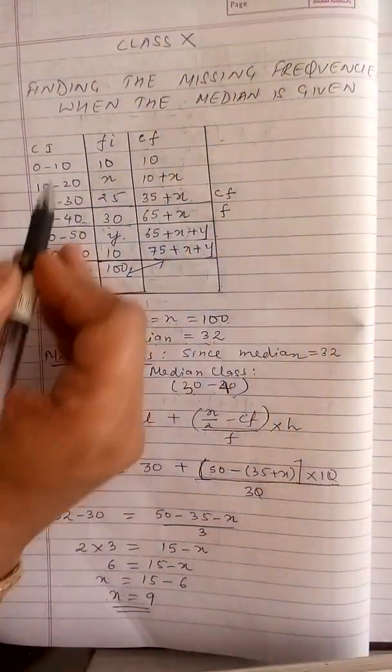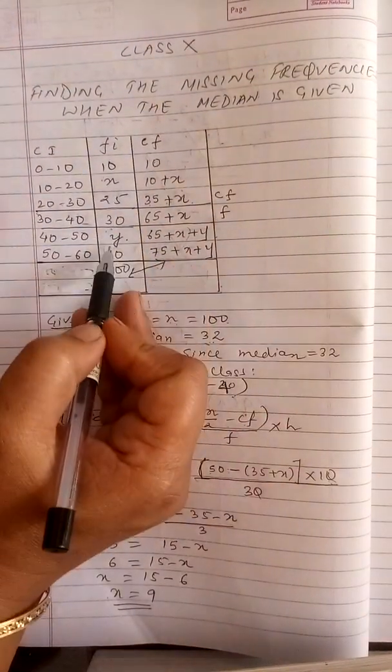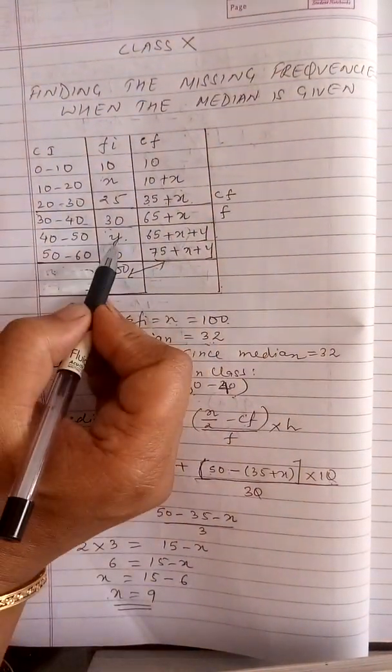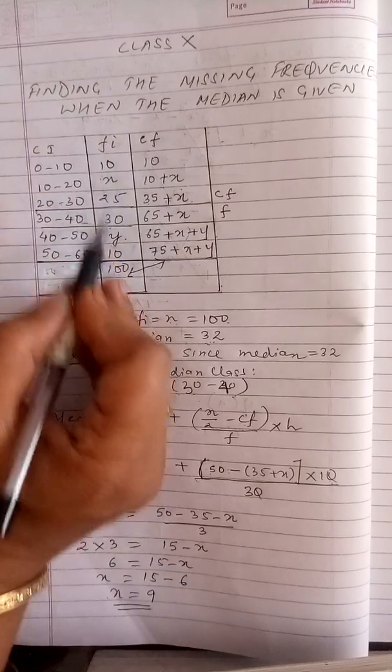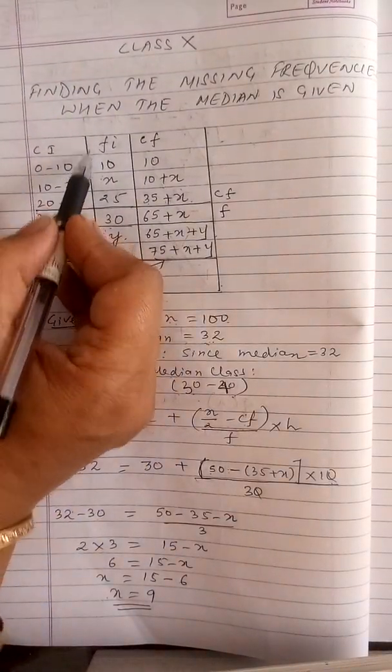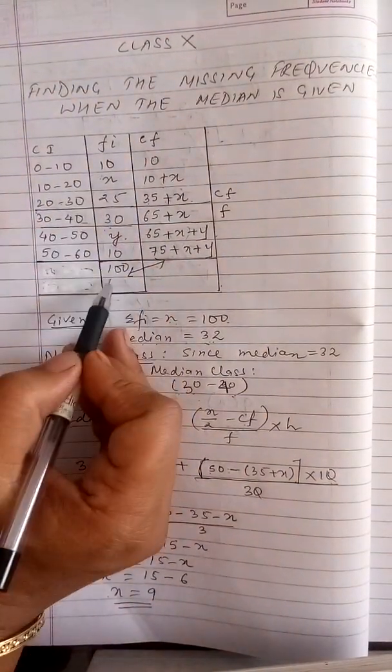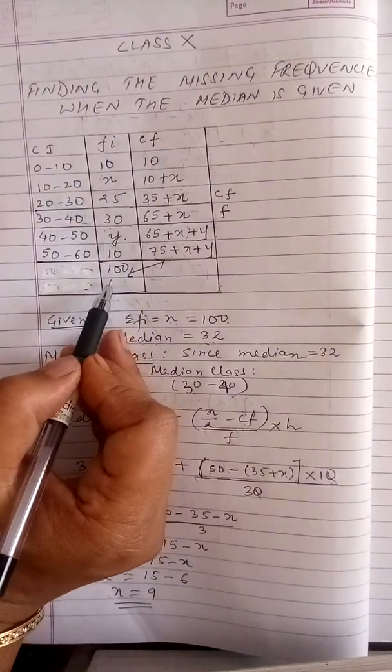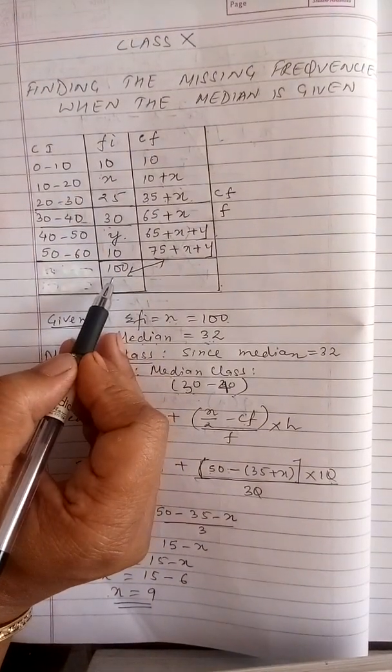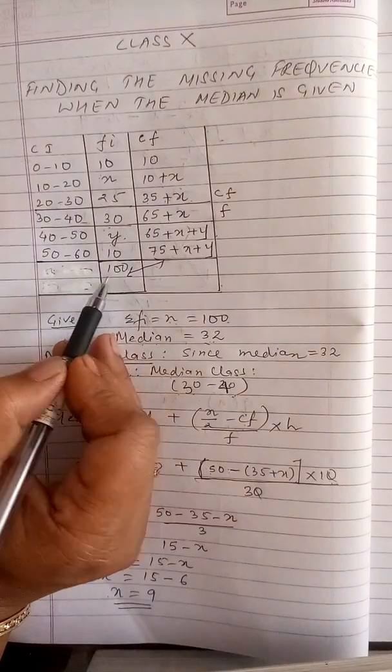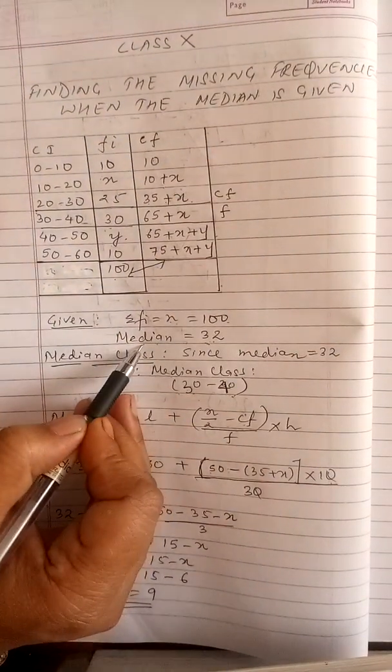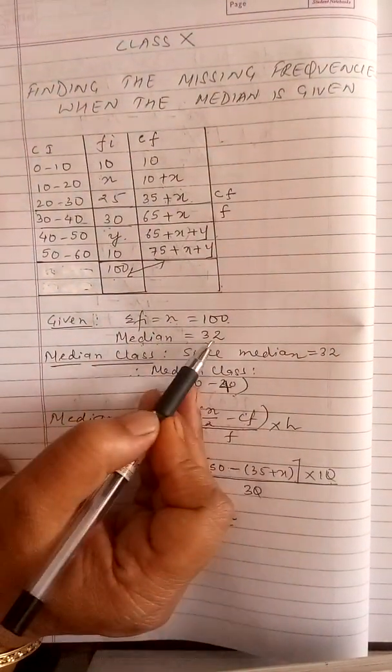In the question, you are given class intervals and frequencies, where two frequencies are missing, denoted as x and y. You will also be given the total of the frequencies, that is n or sigma fi, which in this question is given as 100. Most importantly, you will be given the value of the median. In the question, the median is given as 32.